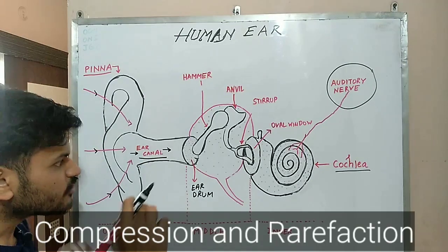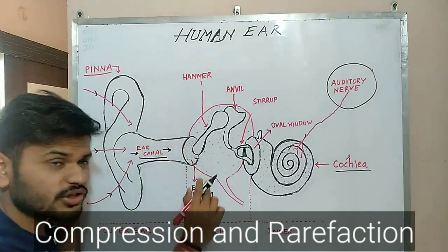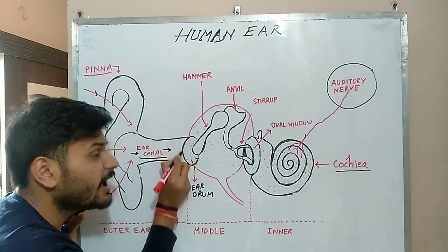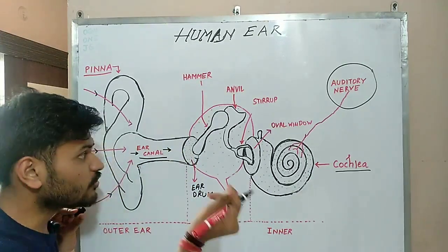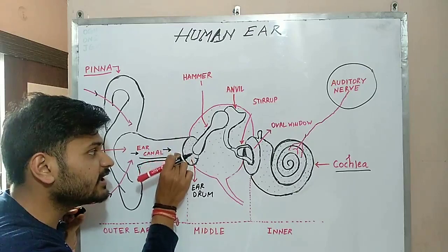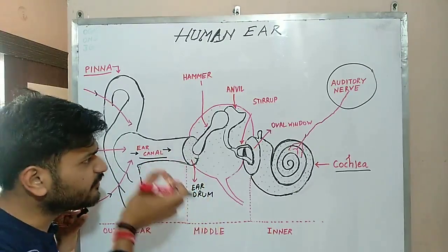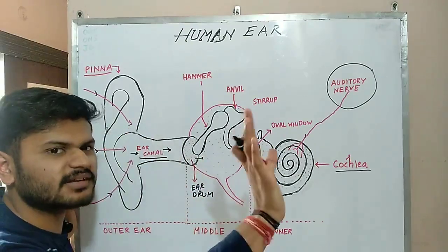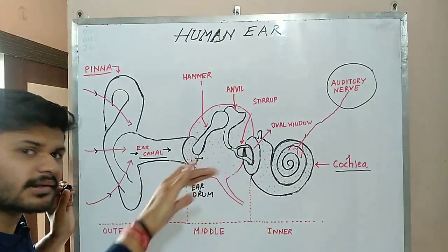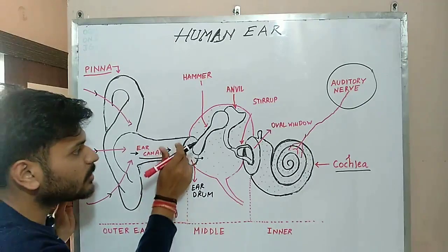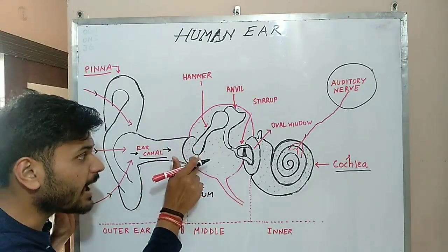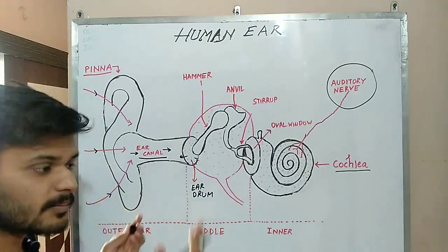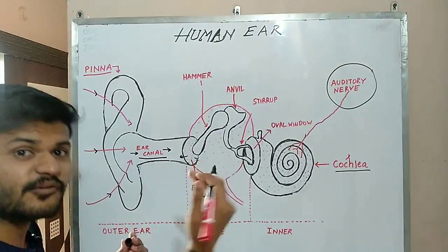As the compression hits the eardrum, the pressure outside the eardrum increases, forcing the eardrum to move inward. When rarefaction occurs, the pressure outside decreases and the eardrum moves back outward. In this manner, our eardrum keeps on vibrating back and forth continuously.